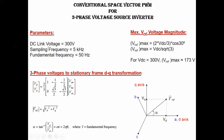Here I have put some information which describes our model. For example, DC link voltage we have used is 300V, sampling frequency is 5kHz, and inverter output voltage fundamental frequency is 50Hz. We have used the conventional space vector PWM technique in this model.